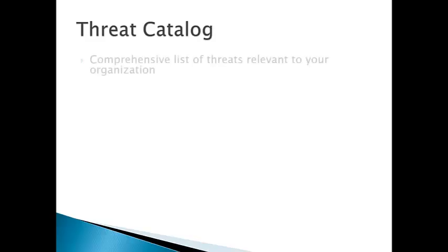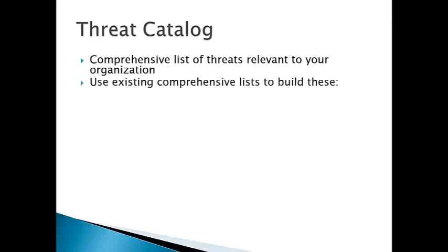The threat catalog is a comprehensive list of threats relevant to your organization, and you can build your catalog starting with existing comprehensive lists, evaluating these, figuring out which threats are actually relevant to your organization, which aren't, which ones you need to define further. Go to publicly available lists of threats and then ascertain which ones you need to be worried about.